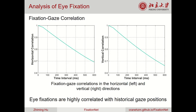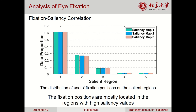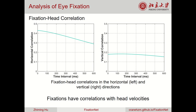We analyzed the correlations between users' eye fixations and their historical gaze positions. The results indicate that eye fixations are highly correlated with historical gaze positions. The correlations between eye fixations and task-related objects were also analyzed, and the results indicate that fixations are correlated with task-related objects. We further computed the distribution of users' eye fixation positions on the saliency regions of the VR content, finding that the fixation positions are mostly located in regions with high saliency values. We also revealed that fixations have correlations with users' head velocity.